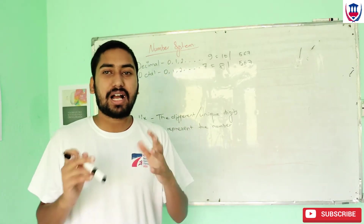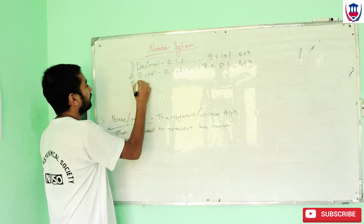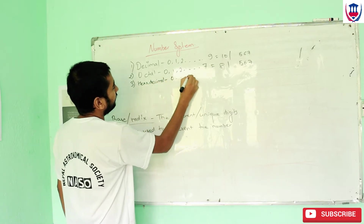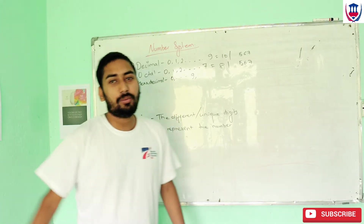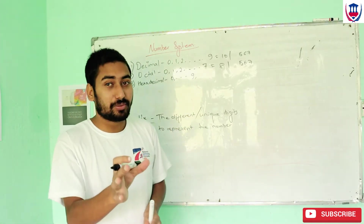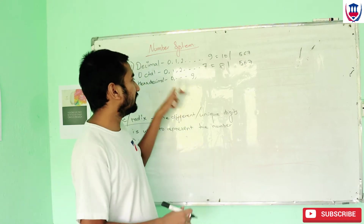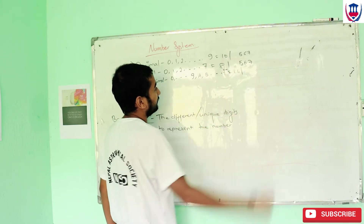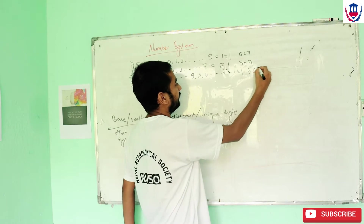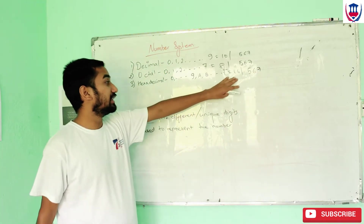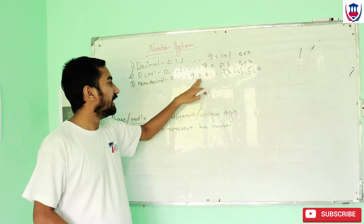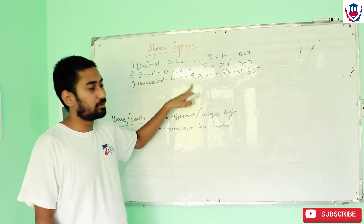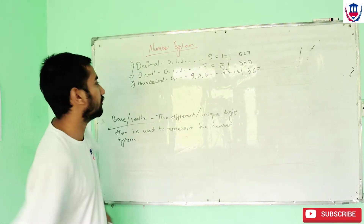In octal, digits go from 0 to 7, so the base is 8. Now for hexadecimal — the base is 16. It uses digits 0 to 9, and then the letters A, B, C, D, E, F to represent values 10 through 15. So A represents 10, B represents 11, and so on up to F which represents 15. Total unique digits are 16.